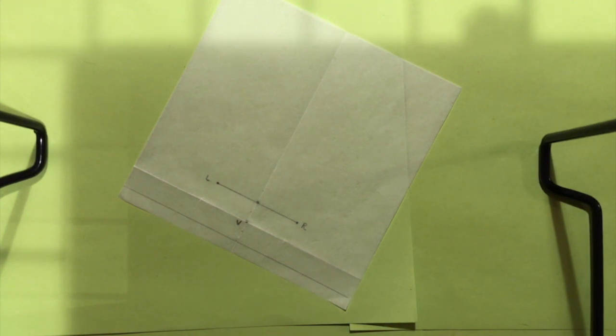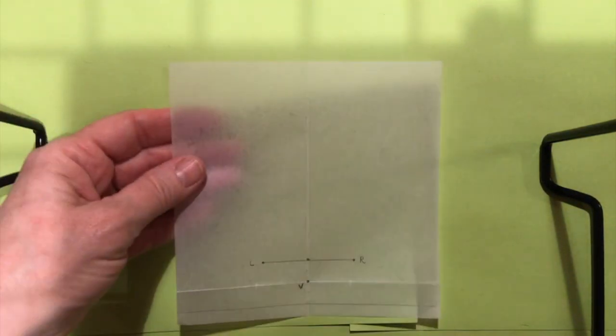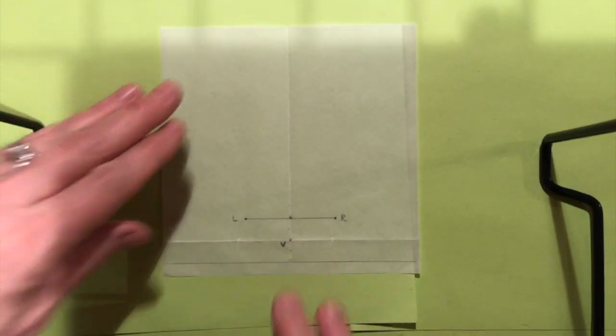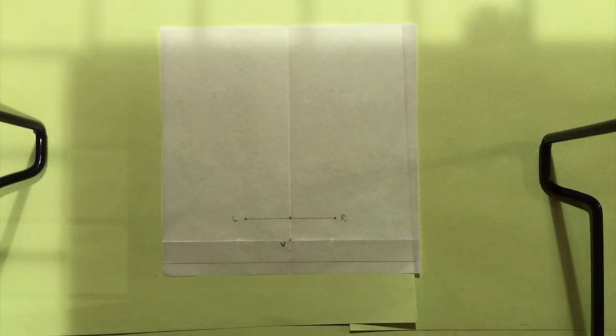I'm going to start with this first layer that I made that I've just added to. I'm going to darken the points V, L, and R, and their labels.